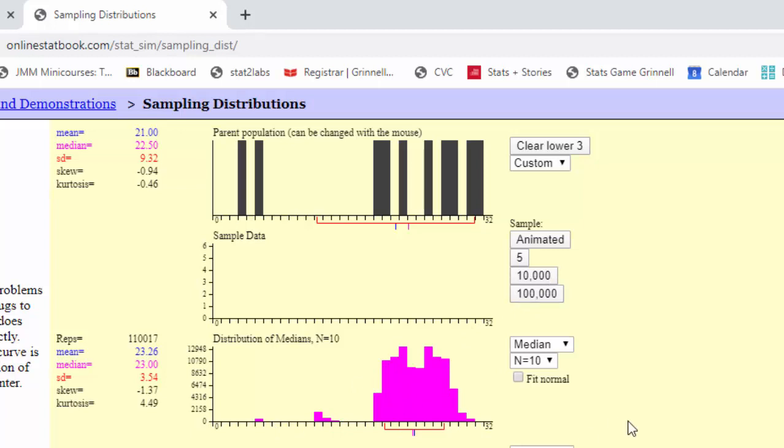The median does not follow a normal distribution. It doesn't look nice and normally distributed. Because of this, we can't use the central limit theorem, and thus we can't use the t-distribution or the z-distribution to calculate confidence intervals. However, we can use the percentile method to calculate a 95% confidence interval for the median.